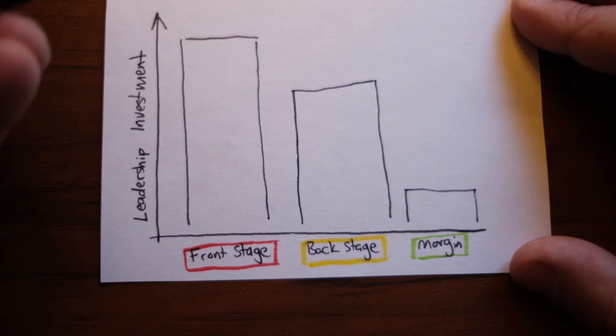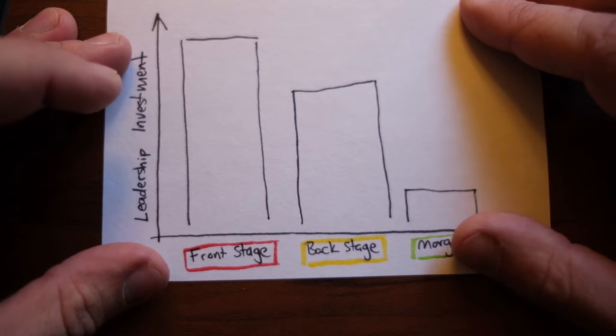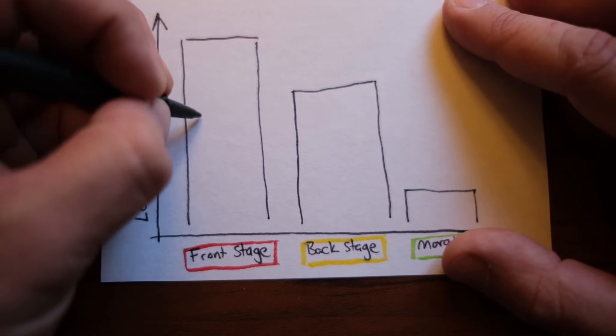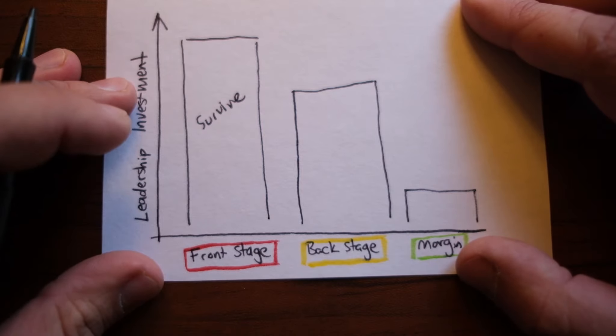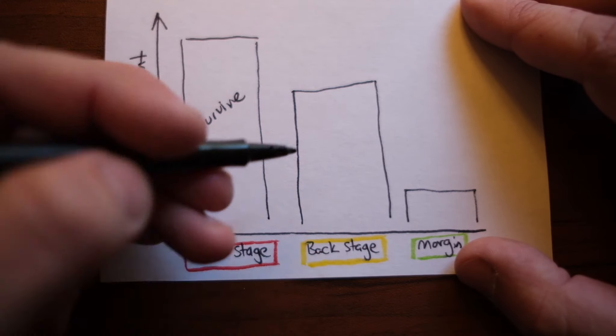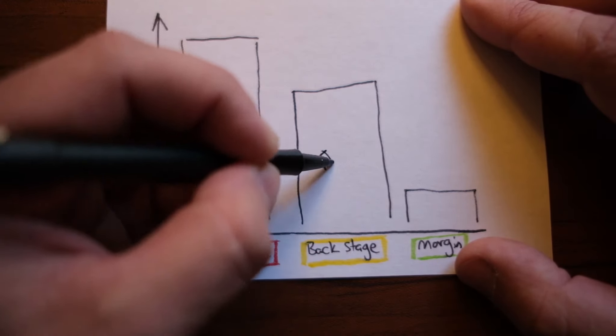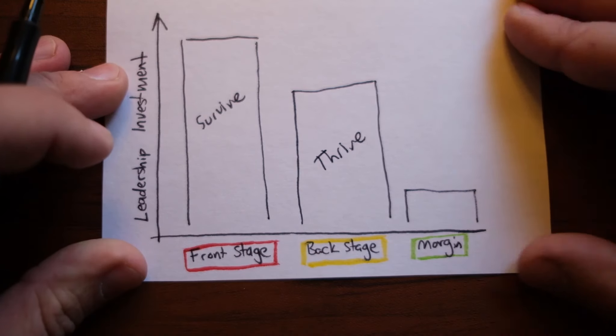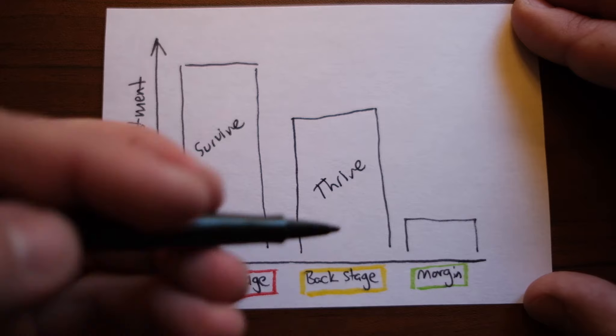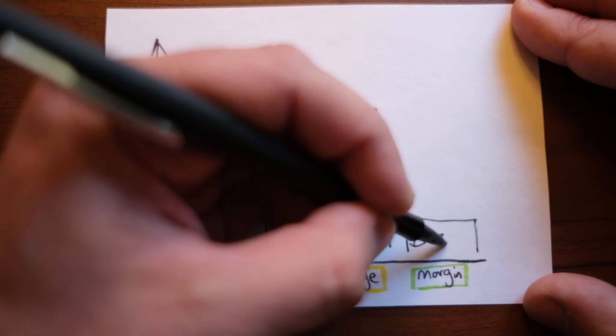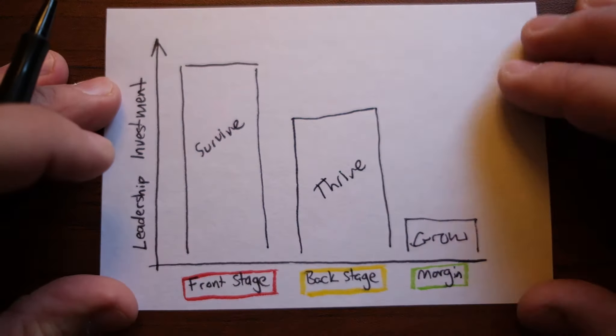And this should be corrected, because we've seen that teams that invest heavily into the front stage are really just set up to survive. Whereas if a team invests a lot into backstage, they'll be able to thrive because they have those relationships. But what we are saying is that teams that invest into margin will actually be able to grow. And this is what we want to see more of.